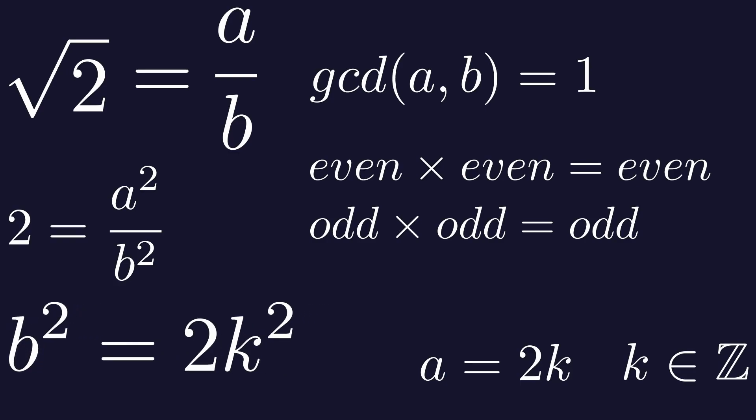And that gives us b squared equals 2k squared. It means that b also must be even because b squared equals 2 times some integer.